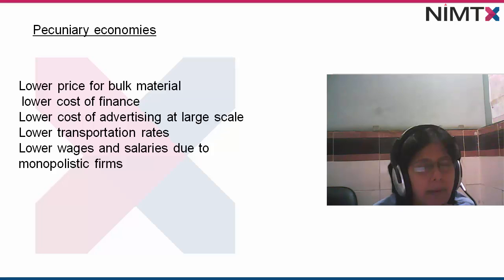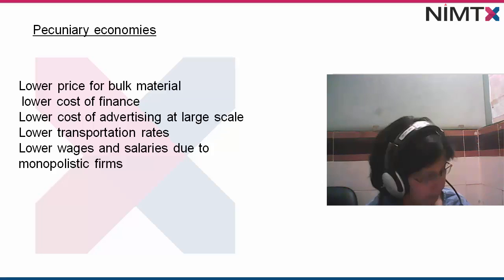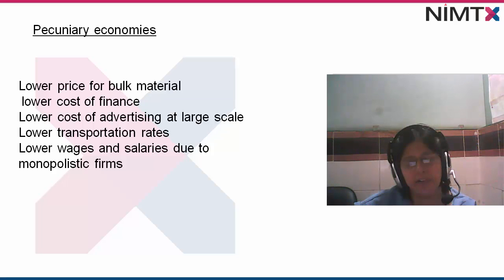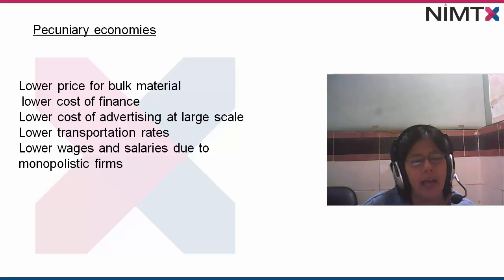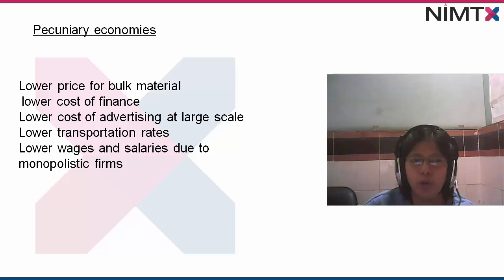For larger advertising firms, their cost of production is decreasing, but for smaller advertising firms, costs increase day by day and have to be controlled due to real economics and pecuniary economics. Regarding lower wages and salaries due to monopolistic firms — monopolistic firms present in the market try to regulate the prices of products and control the monopolistic behaviour of buyers.